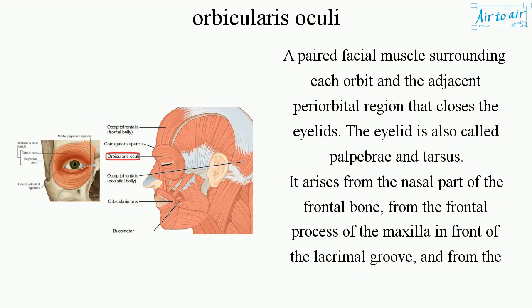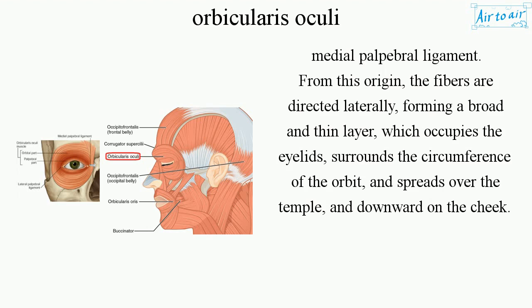It arises from the nasal part of the frontal bone, from the frontal process of the maxilla in front of the lacrimal groove, and from the medial palpebral ligament. From this origin, the fibers are directed laterally, forming a broad and thin layer, which occupies the eyelids, surrounds the circumference of the orbit, and spreads over the temple, and downward on the cheek.